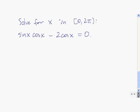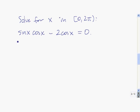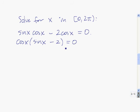Let's take a look at this equation — it's a little more complicated. To solve this one, what we're going to do is factor the left-hand side. We see that cosine of x is common to both terms, so we're going to factor that out. We factor out the first term and get sine of x left; if we factor it out of the second term, we have minus 2.